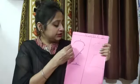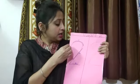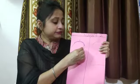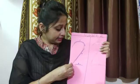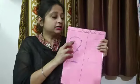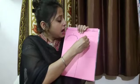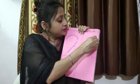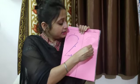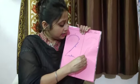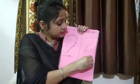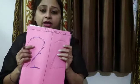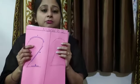For number 2, firstly we have to make a left open half curve, then a slanting line, and then a sleeping line. Here we will make number 2: half open left curve, then slanting line, and then sleeping line. In this way you can make number 2.